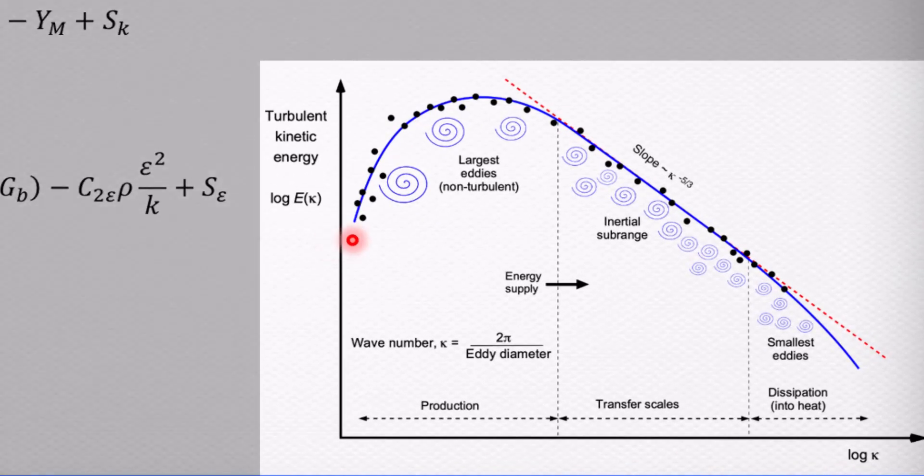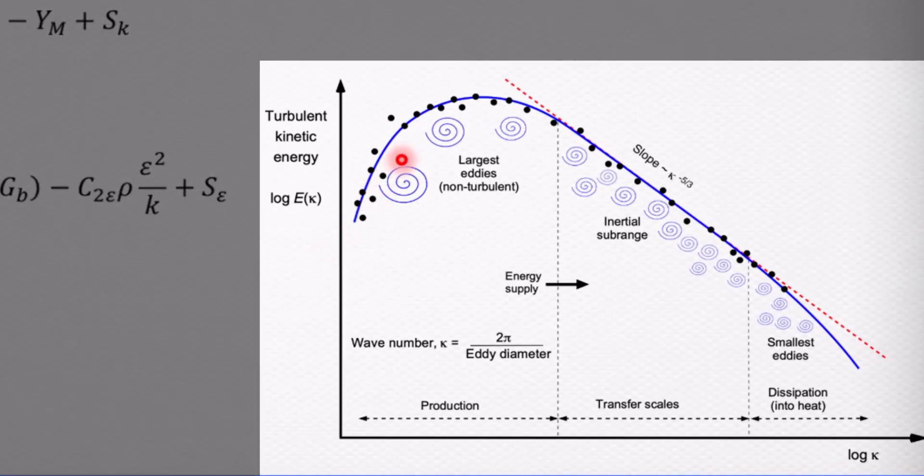The plot shows turbulent energy spectrum, or Kolmogorov energy cascade. It shows that large eddies, they have a lot of kinetic energy, and as they cascade into smaller eddies, they lose their energy, they become smaller, and at the end, they dissipate into heat.